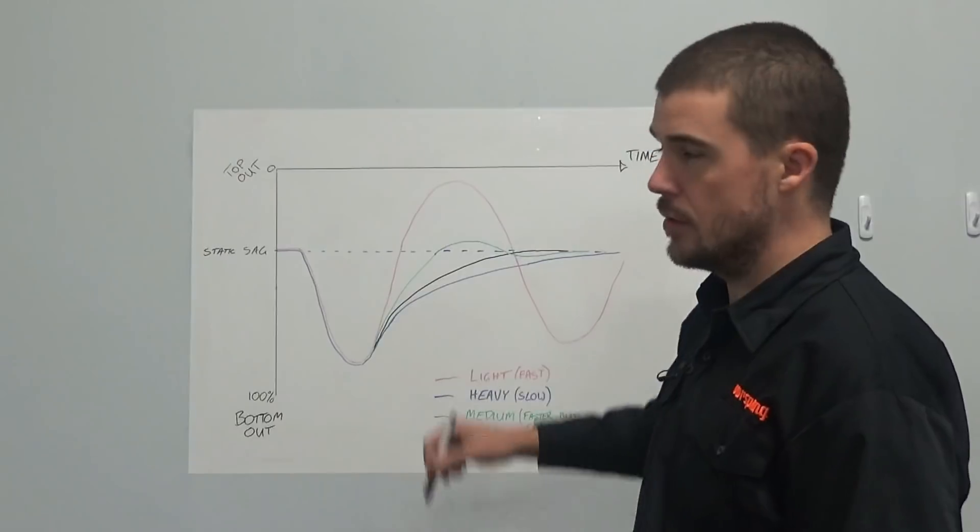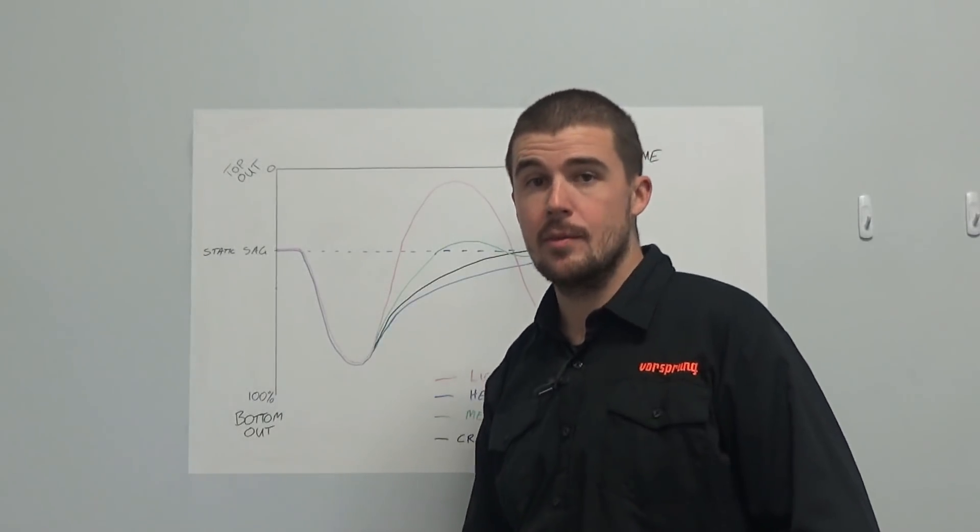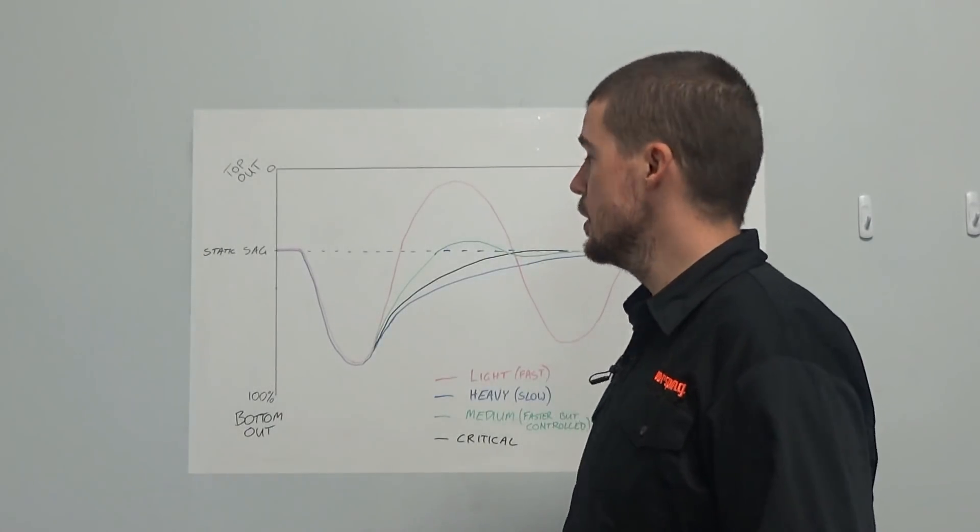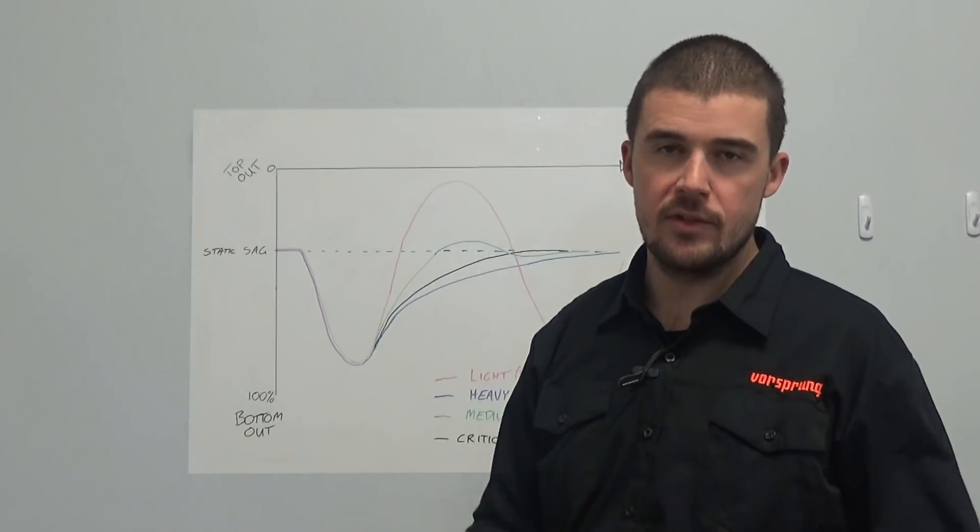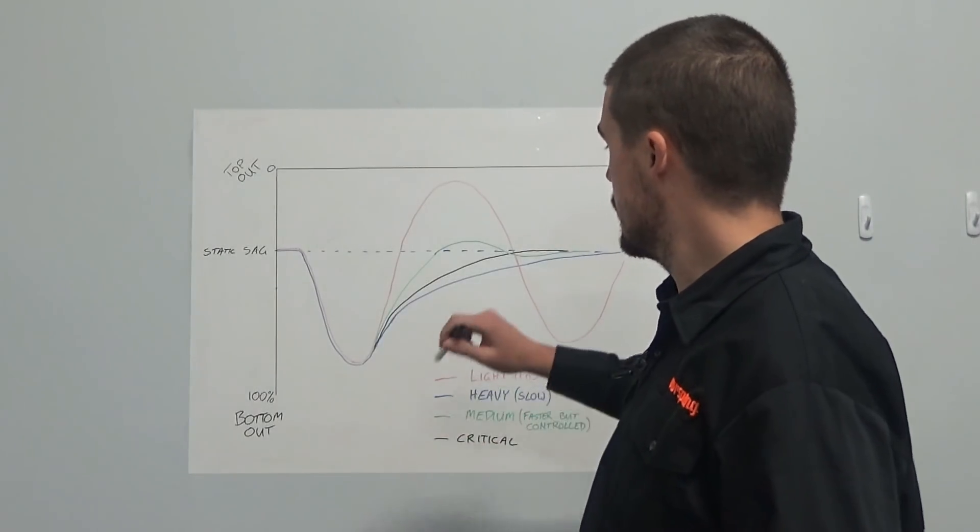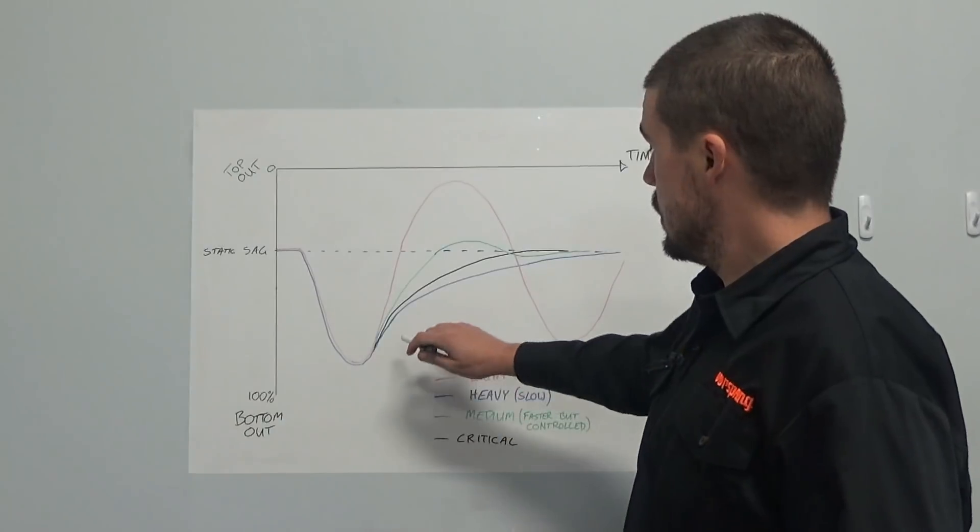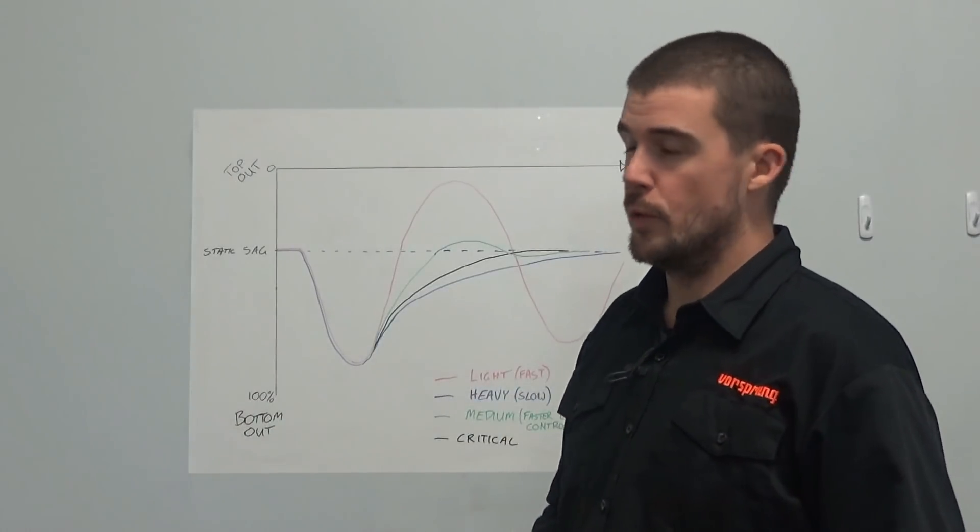So depending on how slow our rebound damping is, what the damping coefficient is, which is not something that anyone is ever realistically going to know or calculate for themselves, there are several different possible responses.